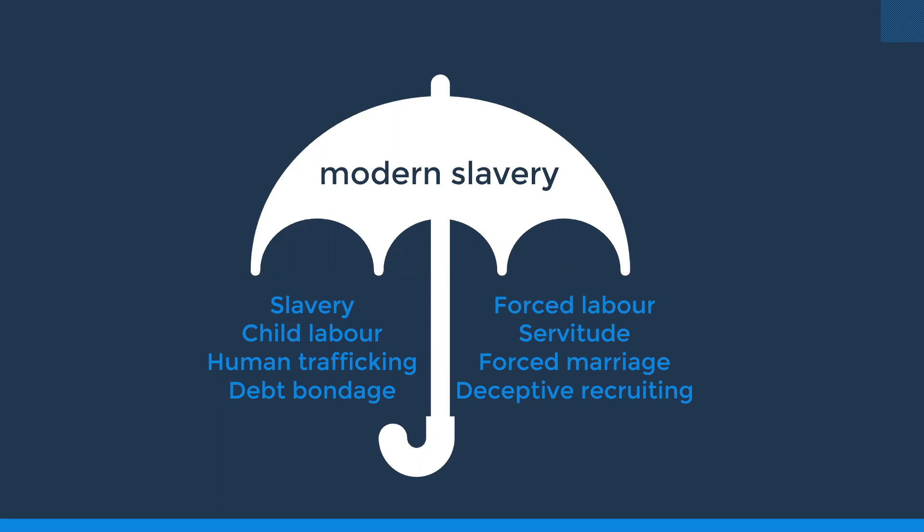Debt bondage occurs when people borrow money or incur a charge — for example, for arranging work, documents or service — and are then forced to work to pay off that debt. Highly inflated interest rates are often applied, making it extremely difficult to pay off. Forced labour refers to any work or service that a person has not given voluntarily, but because they have been threatened with some form of punishment — such as threats of violence to themselves or family, withholding documents or wages, or threats of loss of employment.